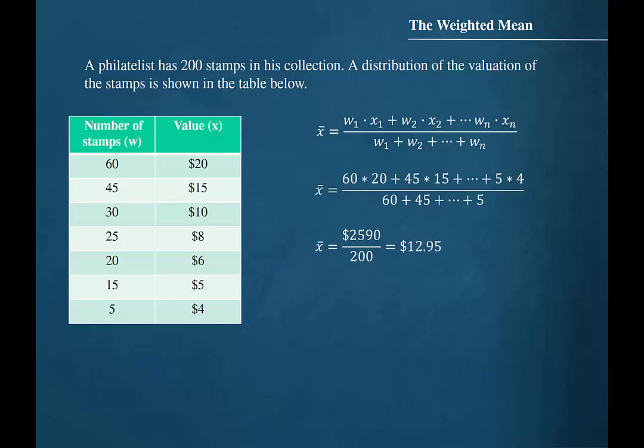Which gives us $12.95. So the average value of the stamps in this collection is $12.95 per stamp.